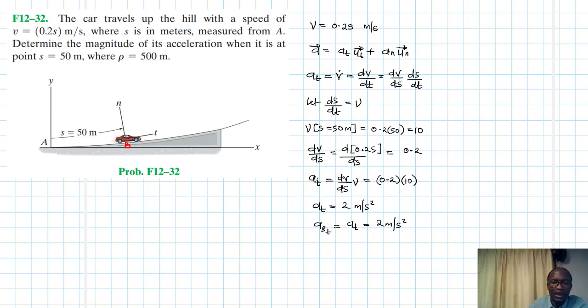So we've found one part. Let's find the other part. The other part is our an is just equal to v squared divided by ρ.